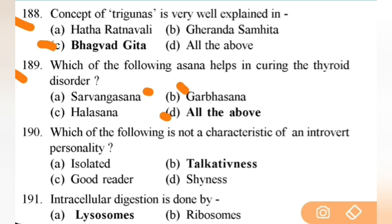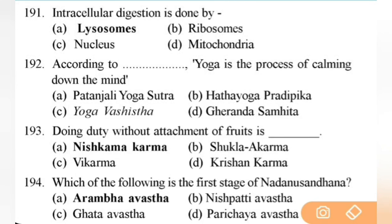Which of the following is not a characteristic of an introverted personality? Right answer is D — talkativeness. All others are characteristics — isolated, good reader, shyness. Next: intracellular digestion is done by — right answer is A — lysosomes. Lysosomes are also known as suicidal bags. Next: according to whom is yoga the process of calming down the mind? Right answer is C — Maharishi Patanjali — very important. Next: doing duty without attachment to fruits is Nishkama Karma — important.